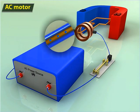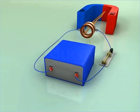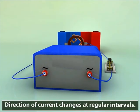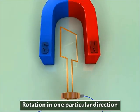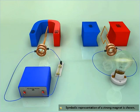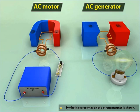As the key is closed, an alternating current starts flowing through the armature. Even though the direction of current changes at regular intervals, the armature rotates in one particular direction because of the slip rings. The action of an AC motor is basically the reverse of that of an AC generator.